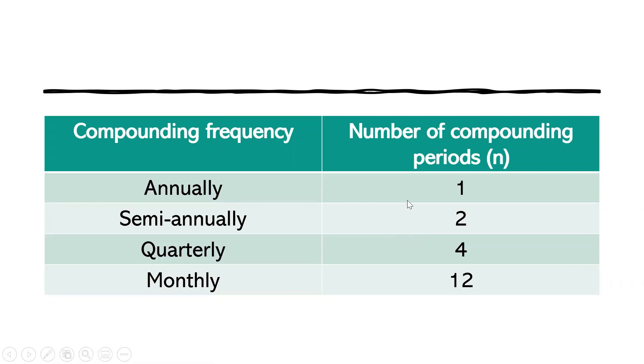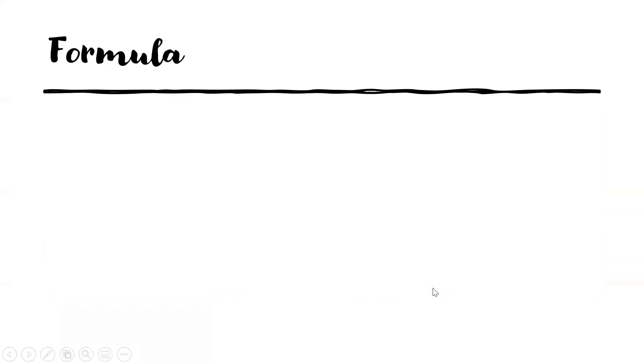The following table gives this information. For annually, interest is given once; for semi-annually, it is given twice; for quarterly, it is given four times; and for monthly, it is given twelve times.